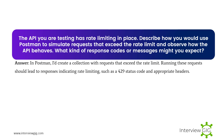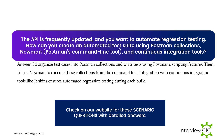Describe how you would use Postman to simulate requests that exceed the rate limit and observe how the API behaves. What kind of response codes or messages might you expect? In Postman, I'd create a collection with requests that exceed the rate limit. Running these requests should lead to responses indicating rate limiting, such as a 429 status code and appropriate headers.